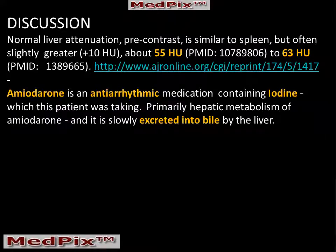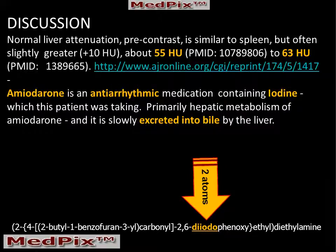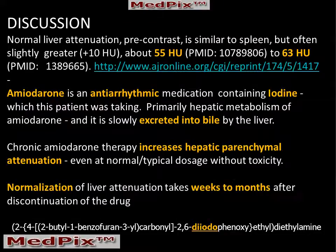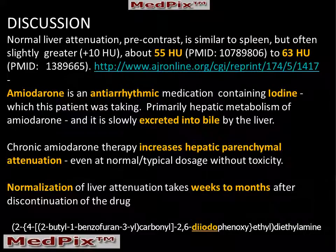Amiodarone is an antiarrhythmic medication, and each molecule contains two atoms of iodine. The normal dose of amiodarone is much larger than the typical dietary ingestion rate for iodine. Chronic amiodarone therapy increases hepatic parenchymal attenuation even with normal dosage, because the liver is the primary site of metabolism of amiodarone, which is then excreted into the bile. If you withdraw the amiodarone therapy, it may take weeks to months before the liver returns to its normal attenuation.